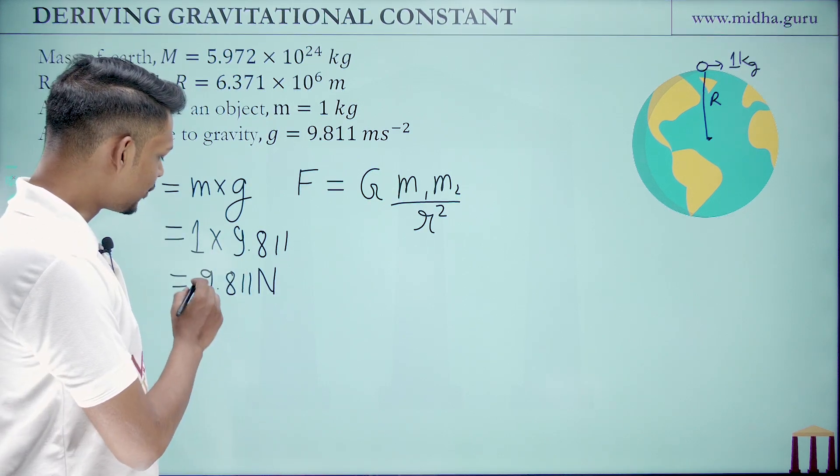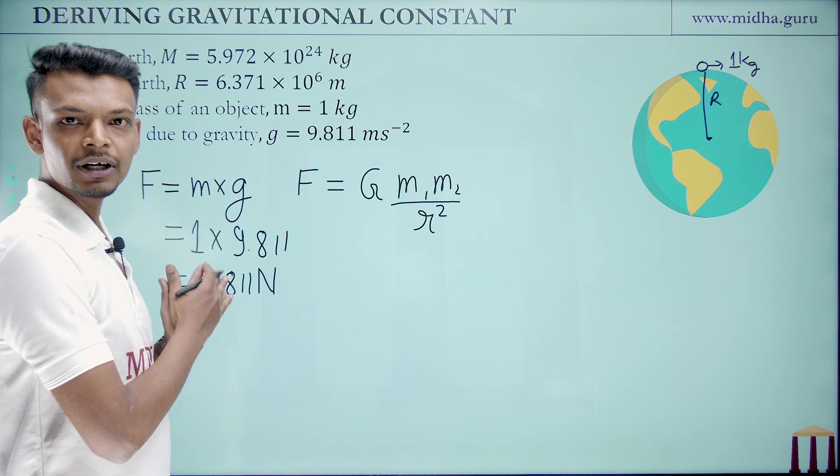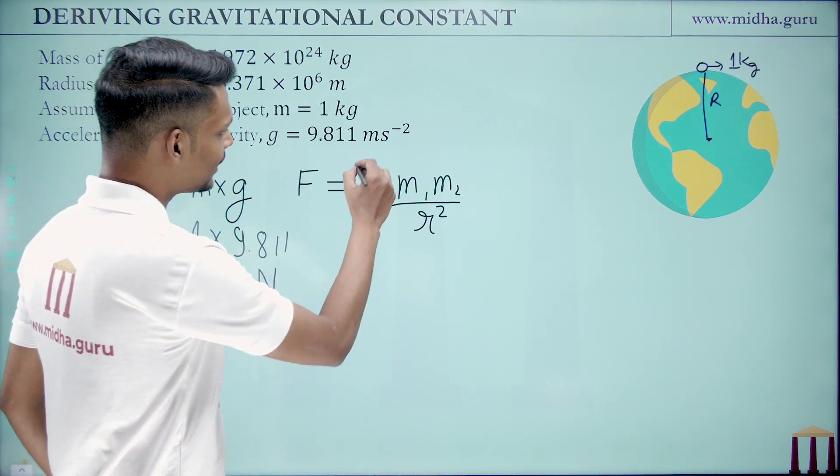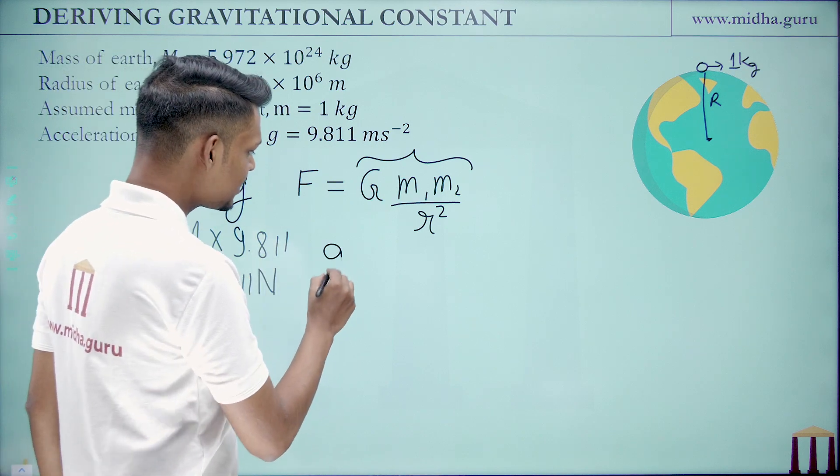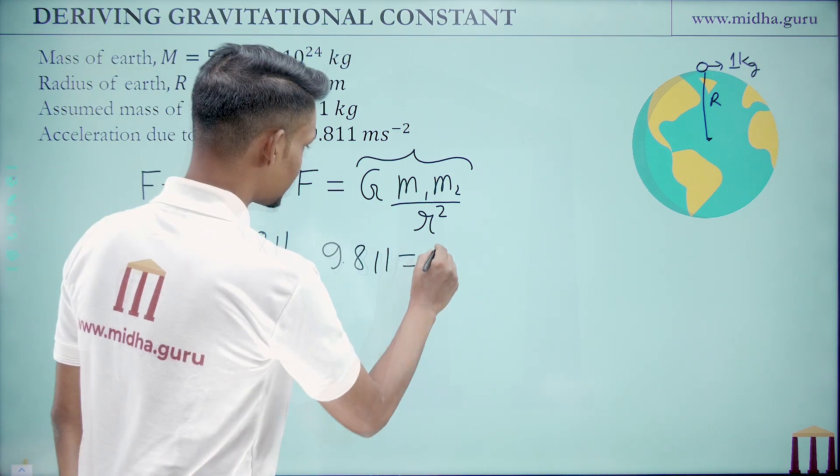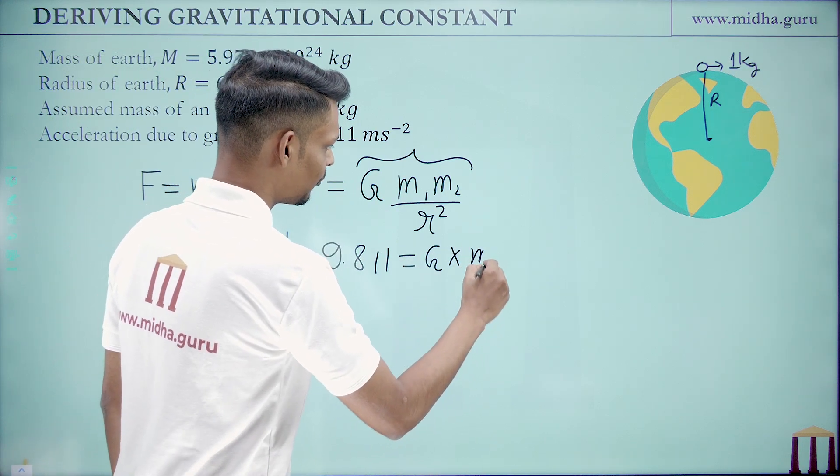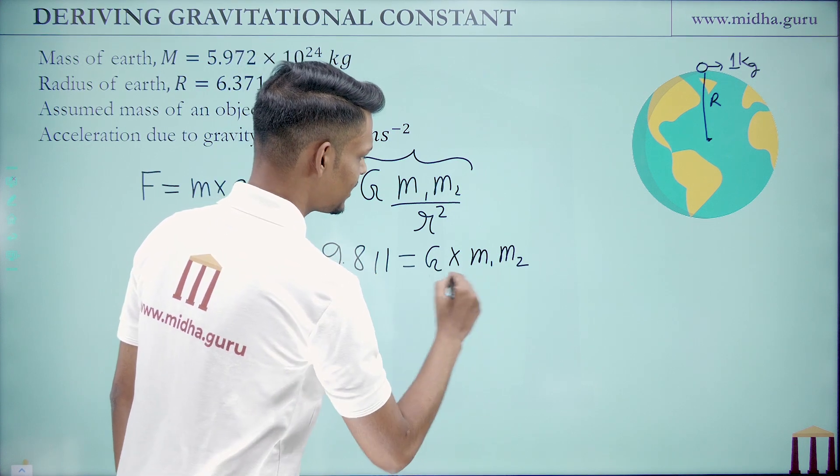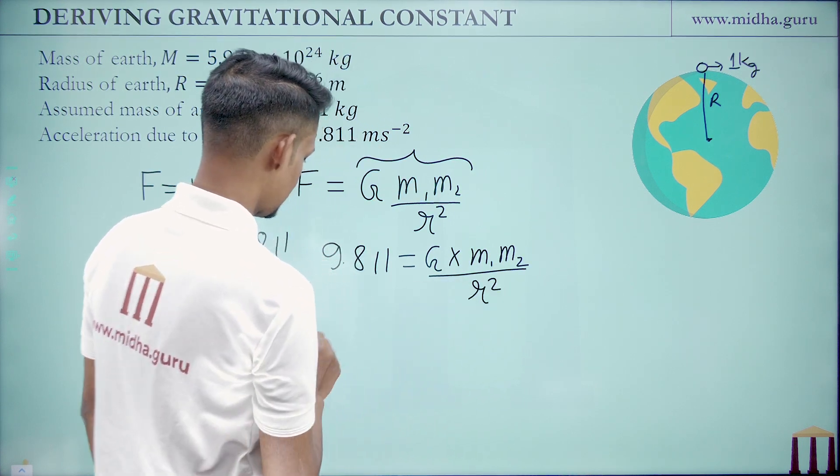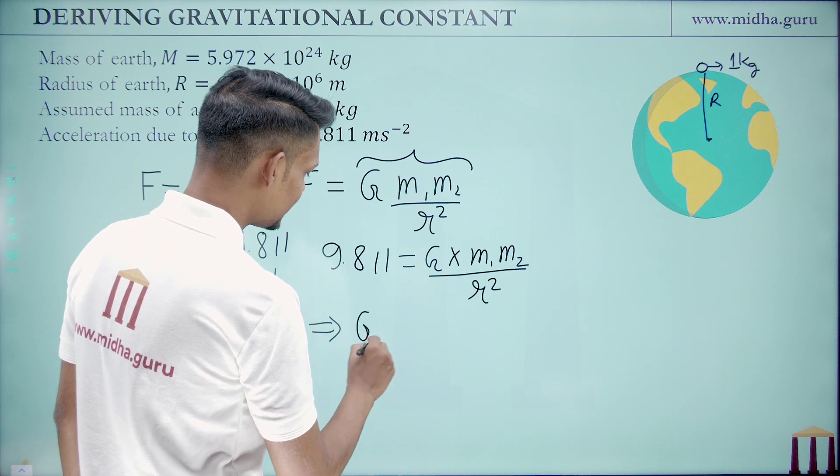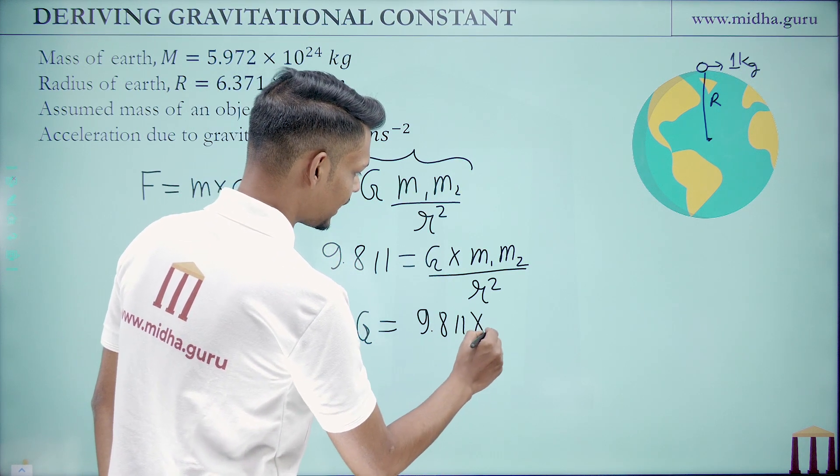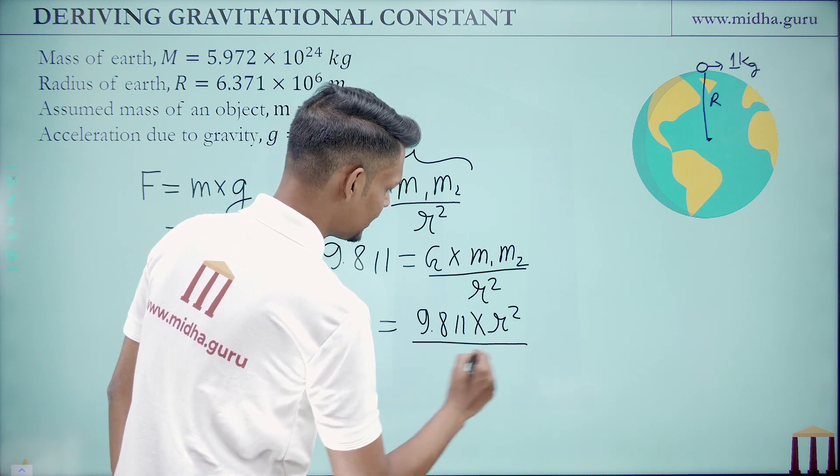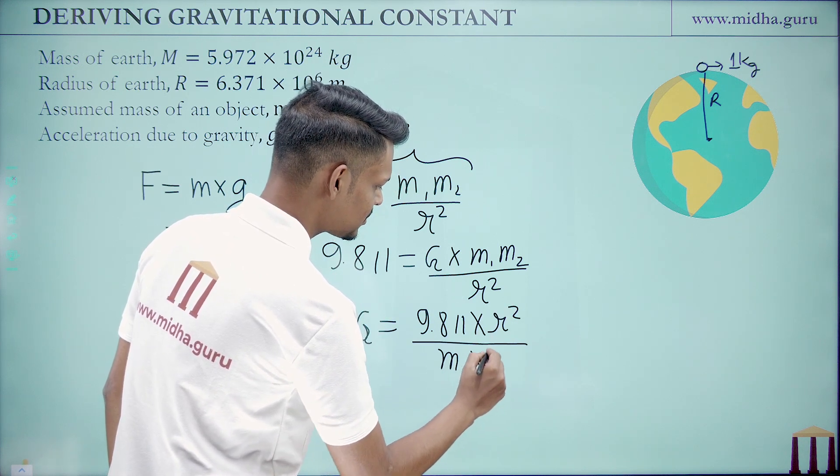Now this is the force exerted by Earth on the object and we know that this is also the same thing. So I can say that 9.811 is equal to G times m1 m2 by r squared. So from here I can write G is equal to 9.811 times r square divided by m1 times m2.